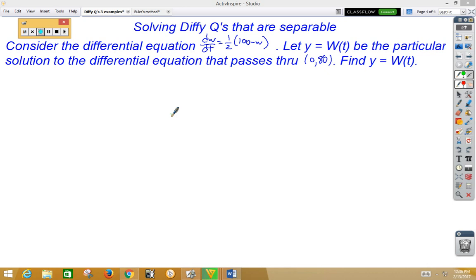So again, let's go ahead and separate. We're going to have to move that 100-w to the left, so let's divide that over. So we get 1/(100-w) dw is equal to... and I'm going to leave that 1/2 over on the right side. I always think that it's easier to leave a coefficient over on the right side.